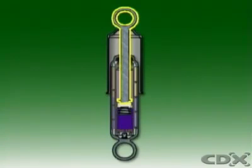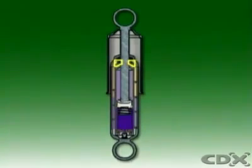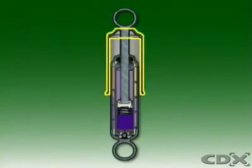The piston rod is connected to the frame at its outer end, and a bearing at the top of the outer tube keeps the rod in alignment as it moves in and out of the shock absorber with suspension action. A seal above the bearing prevents oil leakage and keeps out dirt and moisture. A shroud protects the rod from damage.